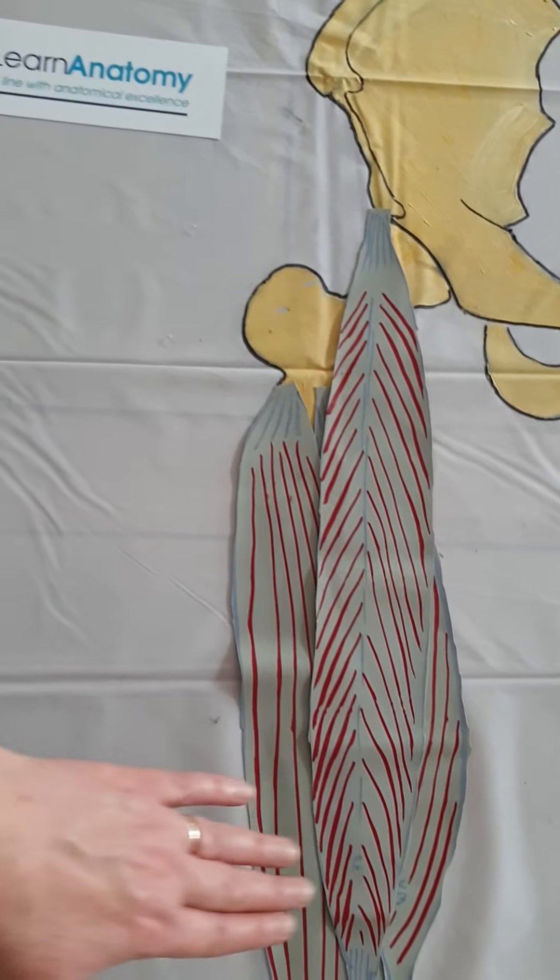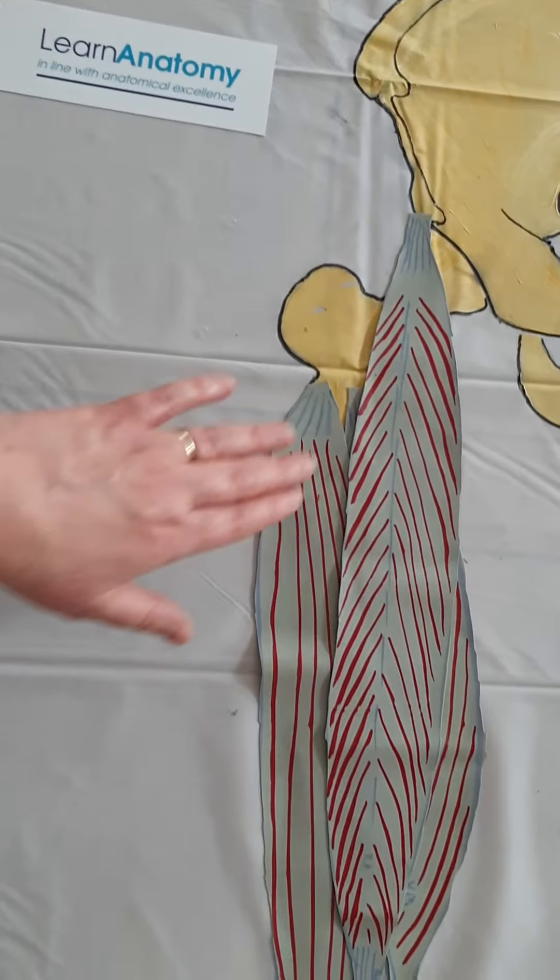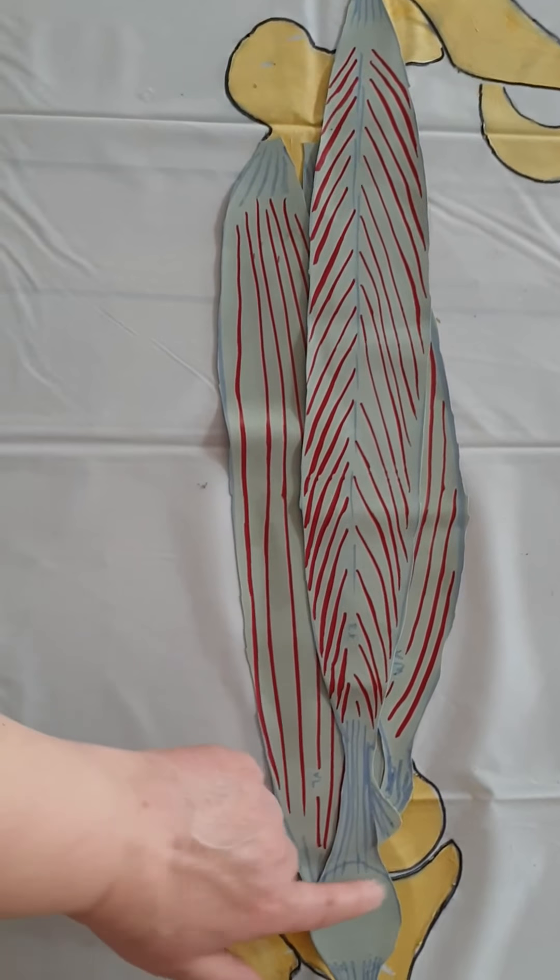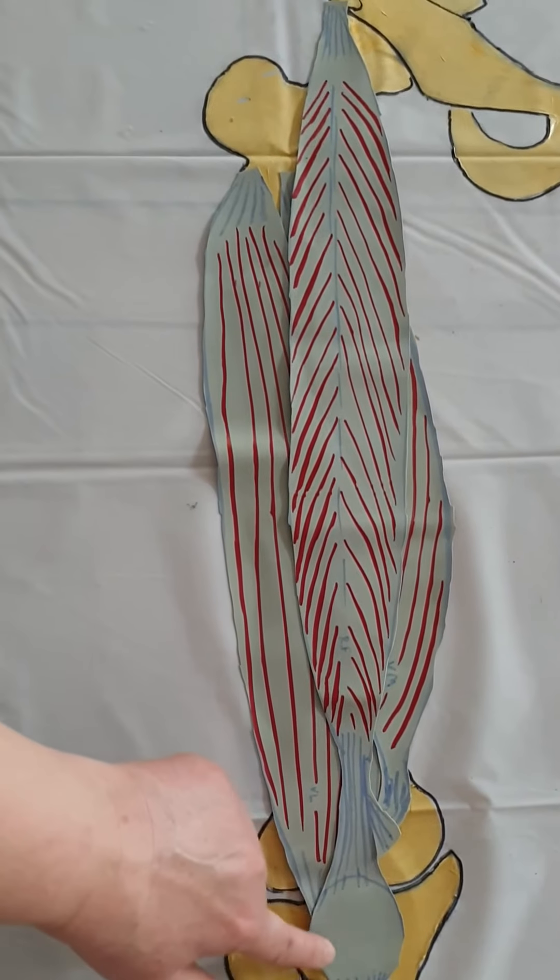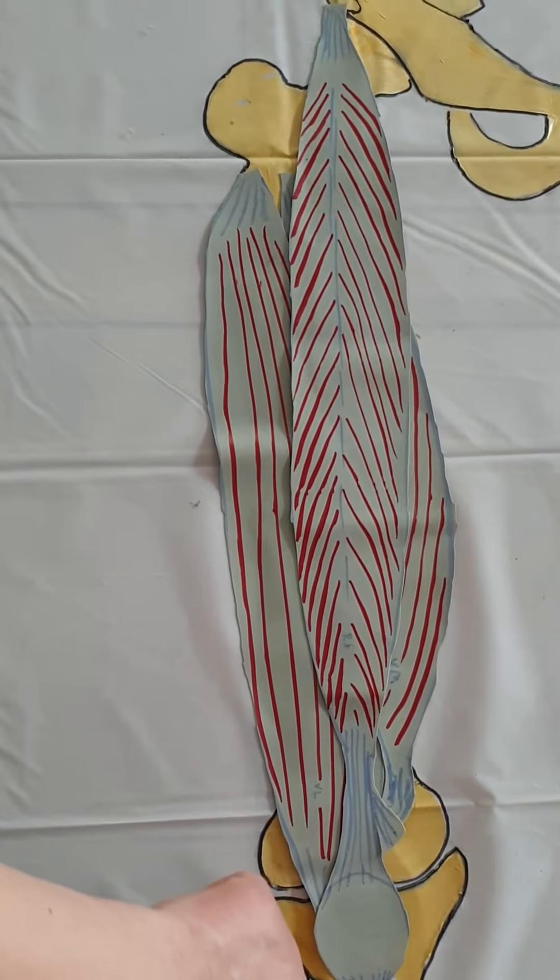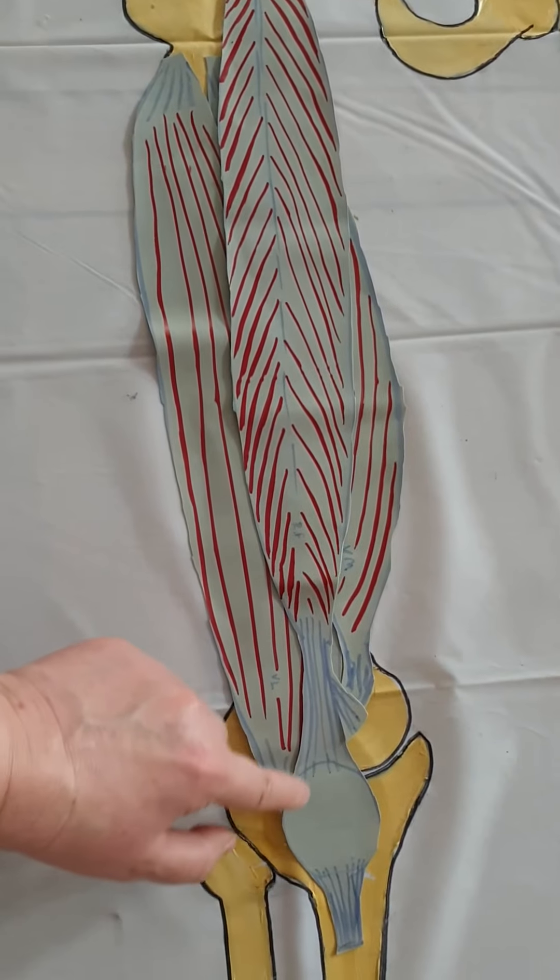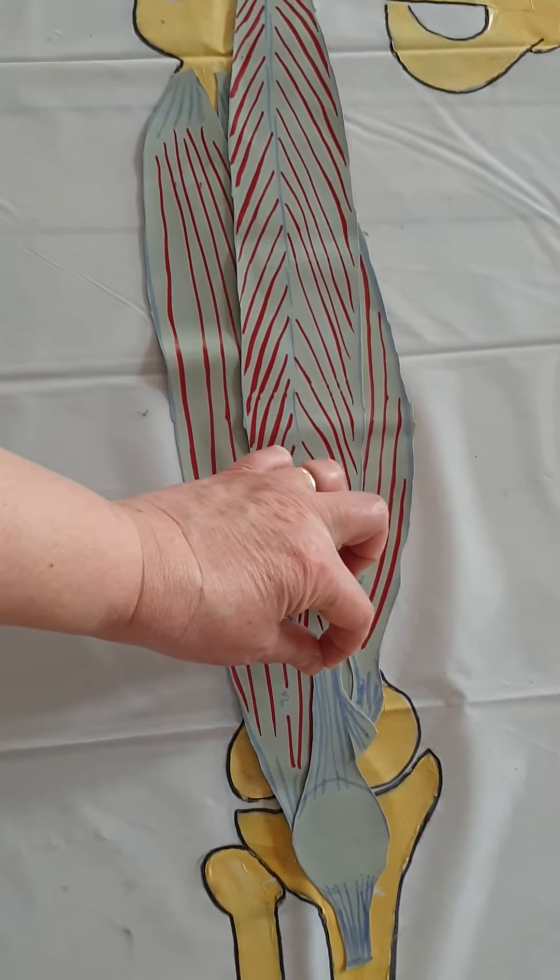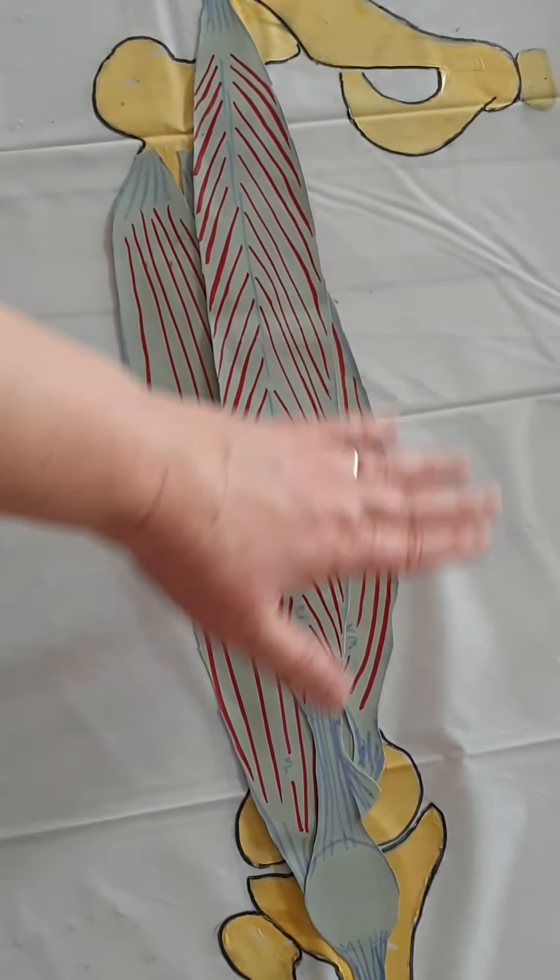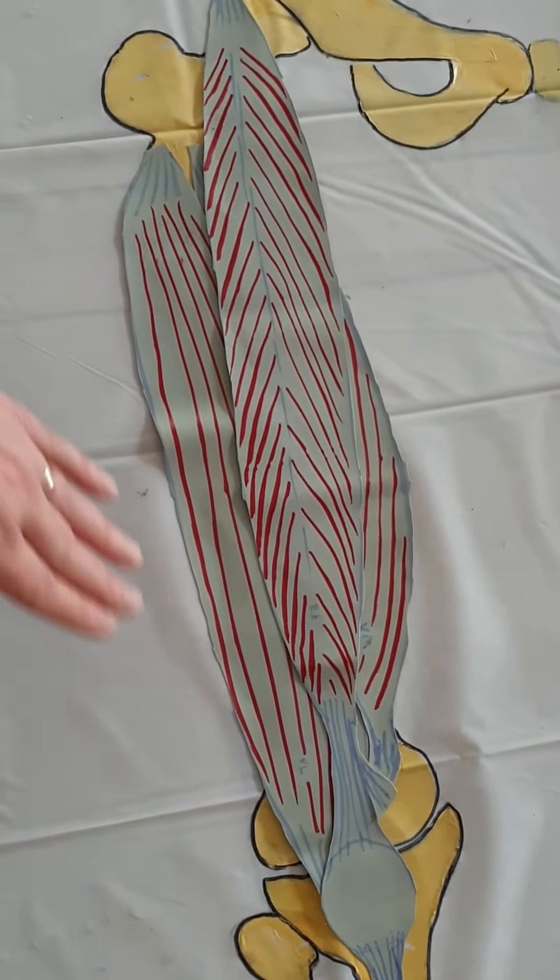And then it inserts all the way down onto the patella, all the way down to the tibial tuberosity here via the patella ligament. And the patella will be a sesamoid bone within this tendon. All of the quadriceps muscles attach via this tendon, so they'll all come down and attach across via the patella ligament—or sometimes called the quadriceps tendon—down onto the tibial tuberosity below.